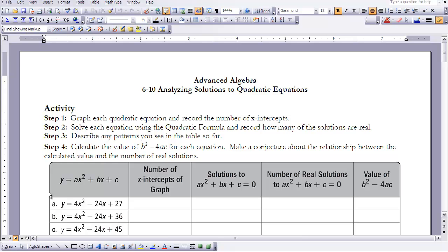And then step four, I want you to calculate the value of b squared minus 4ac for each question. And then I want you to make a conjecture about the relationship between the calculated value and the number of real solutions. So I'd like you to stop the video right now and do the activity as listed below.